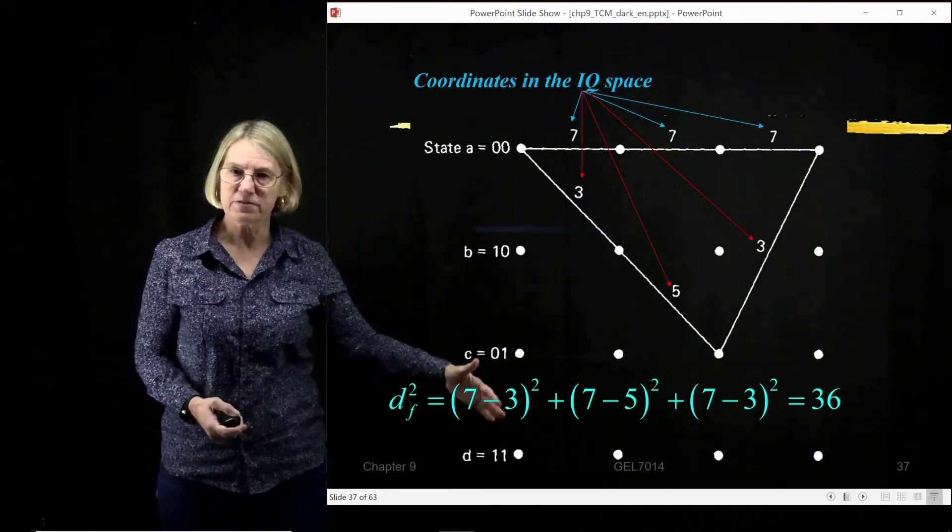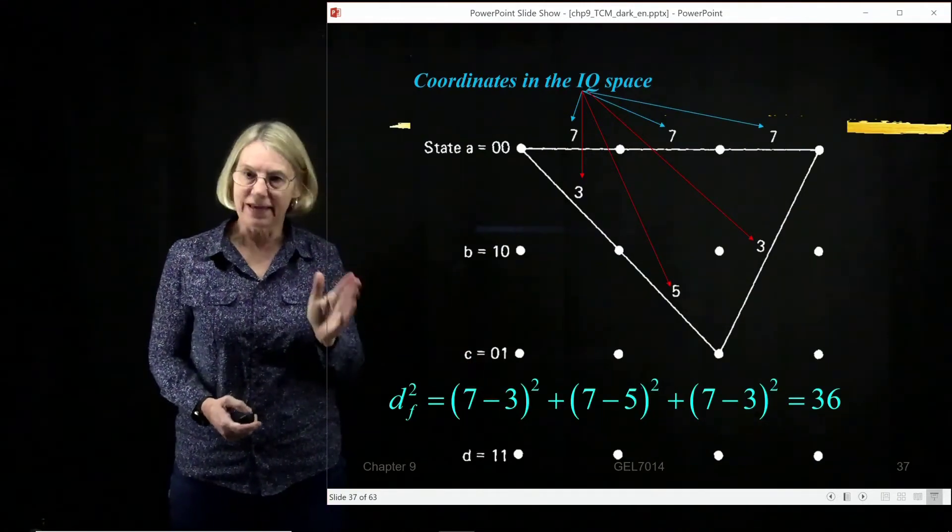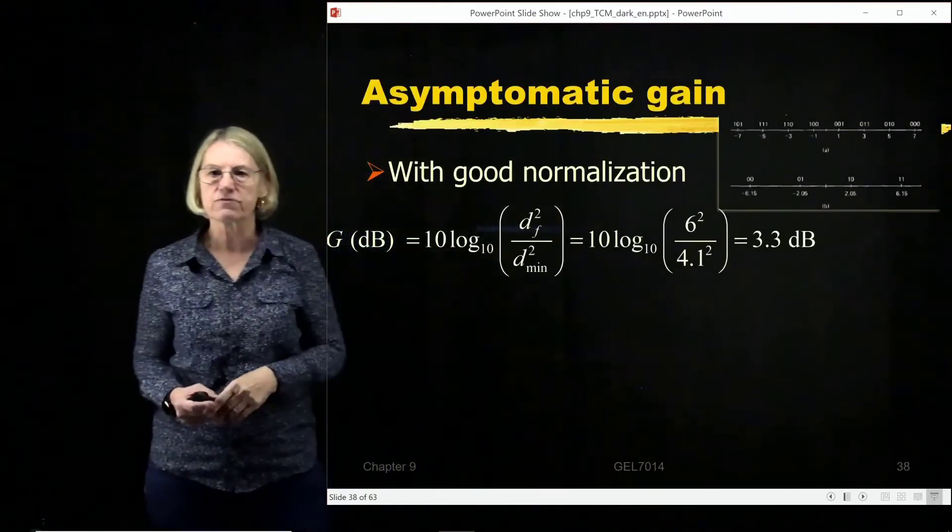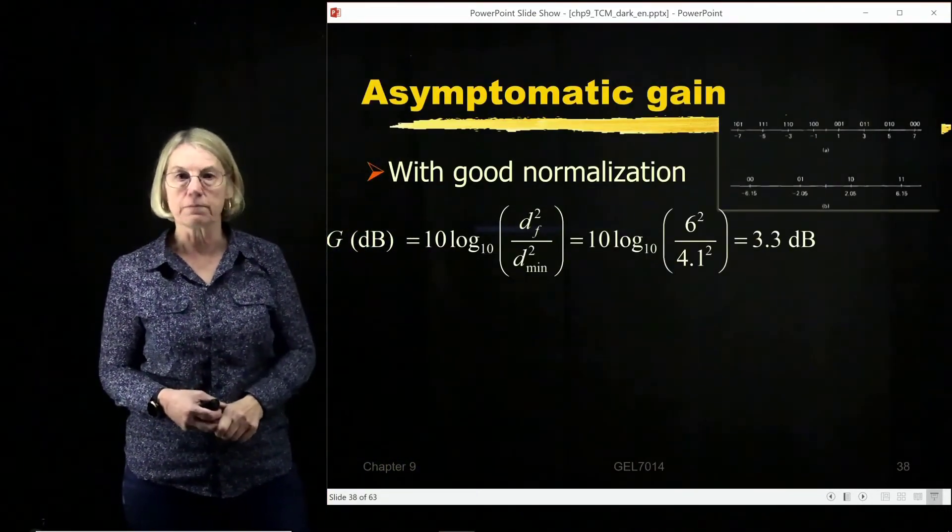So I'm not going to go through all the other paths, but for this code, this ends up being, yes, this is the path with the minimal distance. And the minimal distance is indeed 6 for this TCM, Trellis-Coded Modulation.